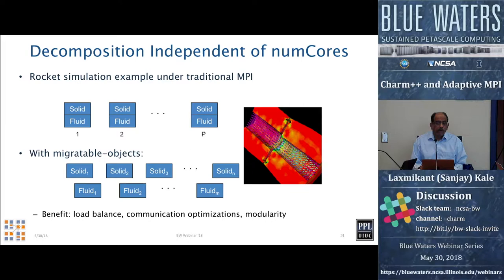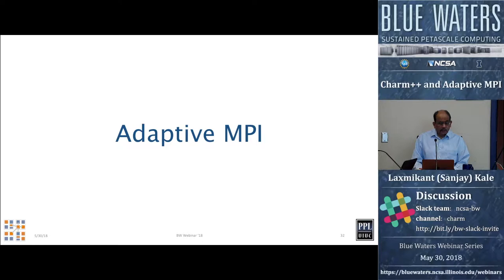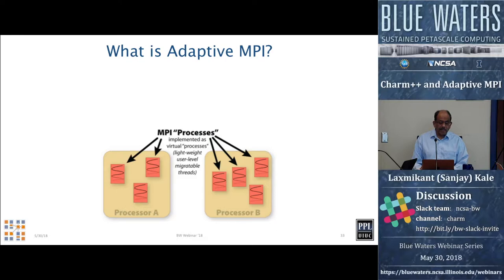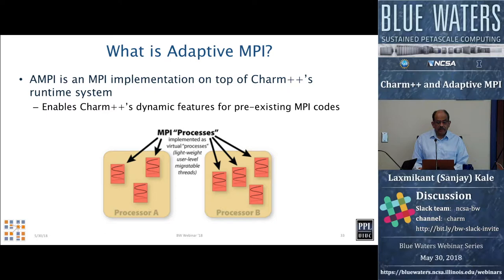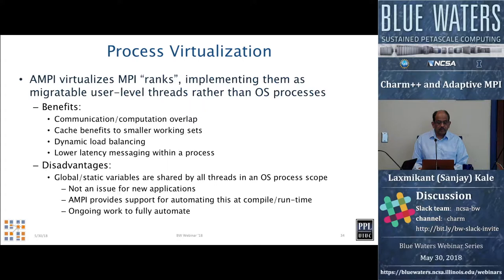Now moving to Adaptive MPI, which is a programming system based on the same ideas, built on top of Charm++. Adaptive MPI is a full-fledged MPI implementation — we work continually to comply with the standard. Each MPI rank is implemented as a virtual thread, a lightweight thread embedded inside Charm++ objects. Each node might have many cores, and each core may have many ranks on it. This gives access to all of Charm++'s dynamic features such as load balancing.